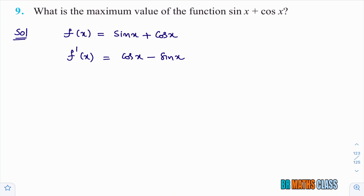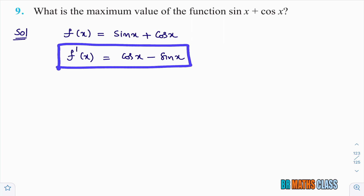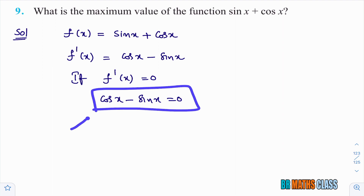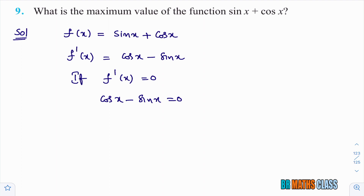If f dash of x equals 0, that means cos x minus sin x equals 0. I'll take sin x to the right-hand side, giving cos x equals sin x. Dividing both sides by cos x, you get tan x equals 1, since cos x over cos x is 1 and sin x over cos x is tan x.